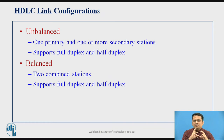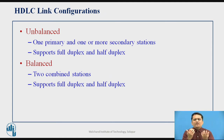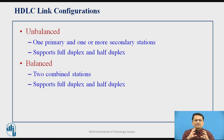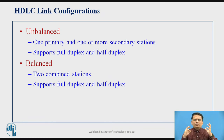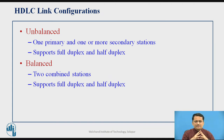In HDLC, there can be two kinds of line configuration. One is called unbalanced configuration — where one is a primary and one or more secondary stations are present. The other is called balanced configuration — where you have two combined stations communicating with each other, since combined stations can work as both primary and secondary. So two configurations are possible: unbalanced and balanced.